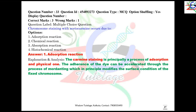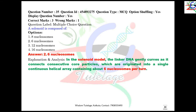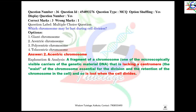Question number 33: chromosome staining with acetocarmine occurs due to adsorption reaction. Question number 34: which molecule is widely distributed in a cell? Obviously RNA. Question number 35: a solenoid is composed of 6 nucleosomes per turn — it is a 30 nanometer fiber structure, with each nucleosome consisting of 5 nanometer length or breadth. Question number 36: which chromosome may be lost during cell division? Any acentric chromosome is always lost during cell division, so the correct option is acentric chromosome.